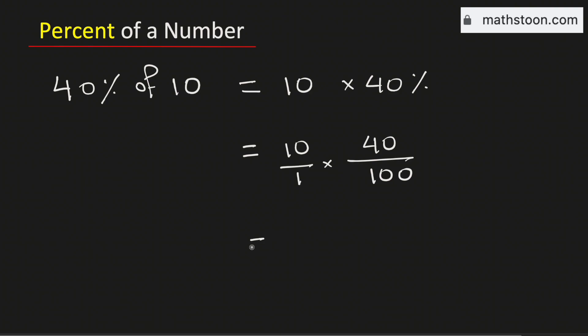Now we'll multiply the numerators. By doing so, we get 400. In the denominator, we have 1 times 100, which is 100.